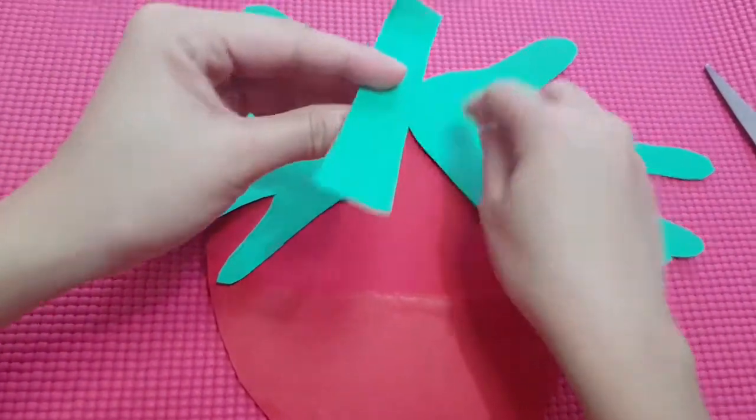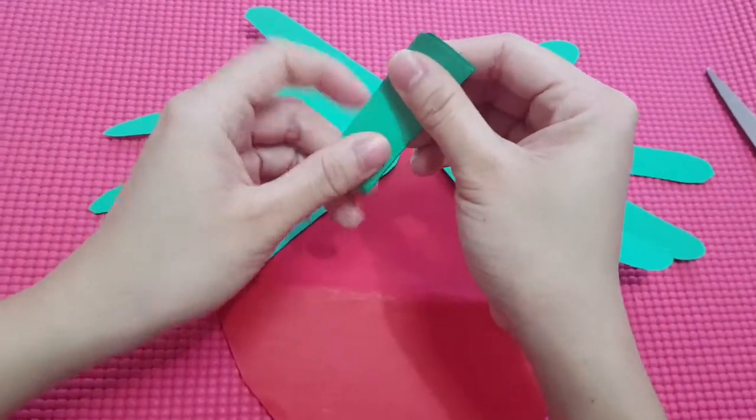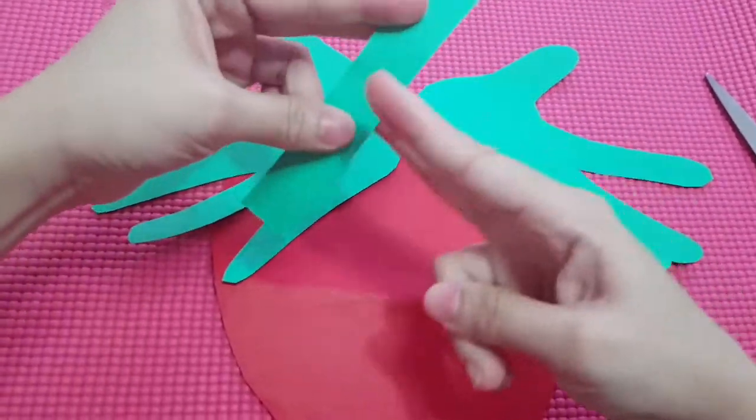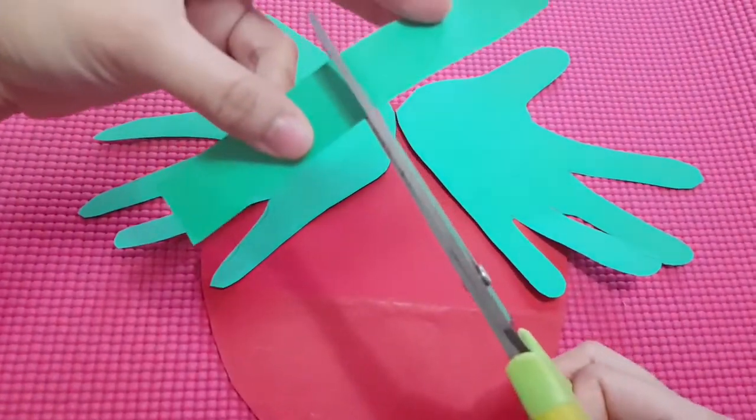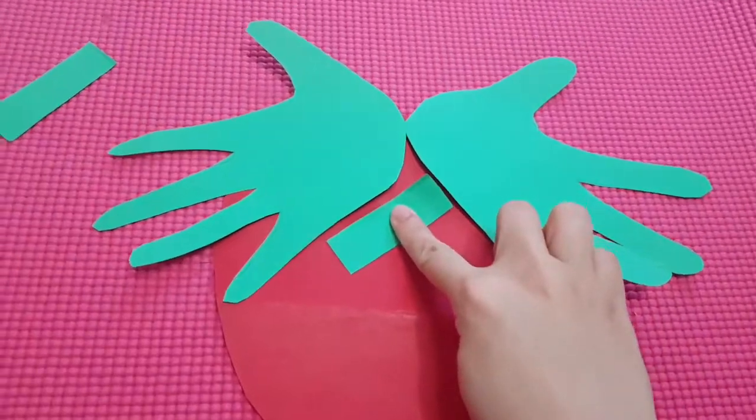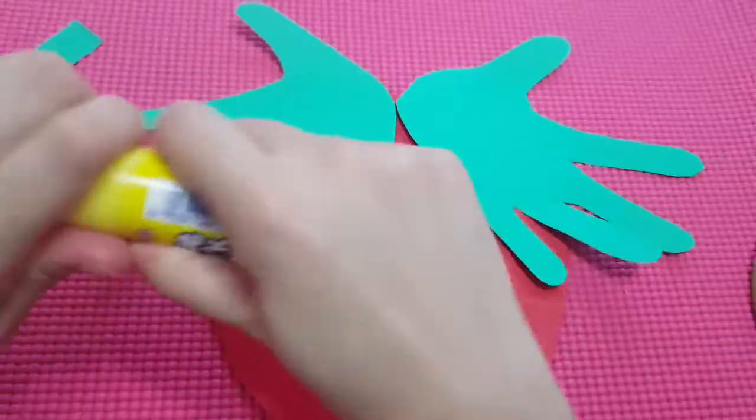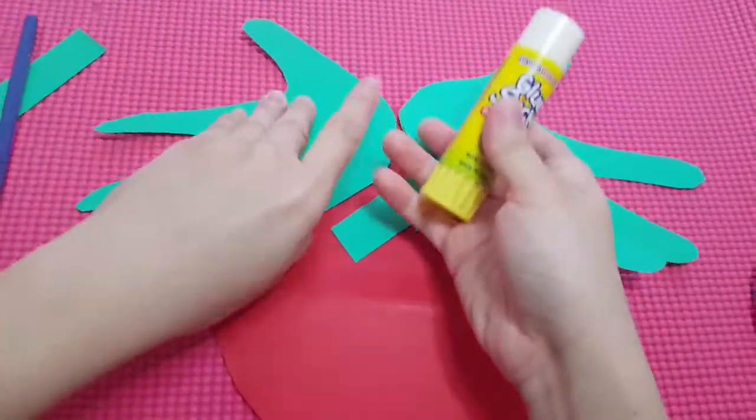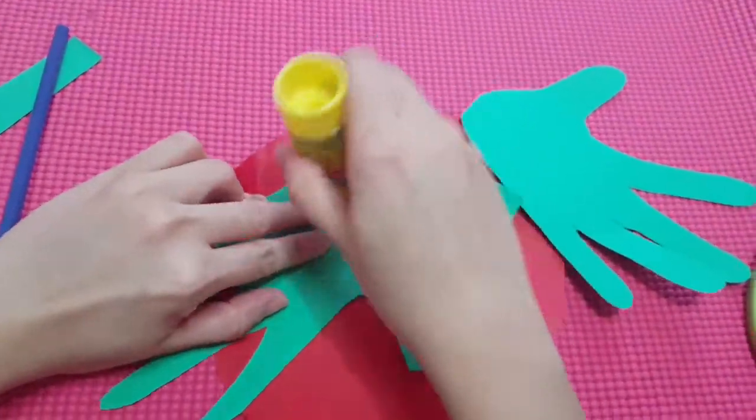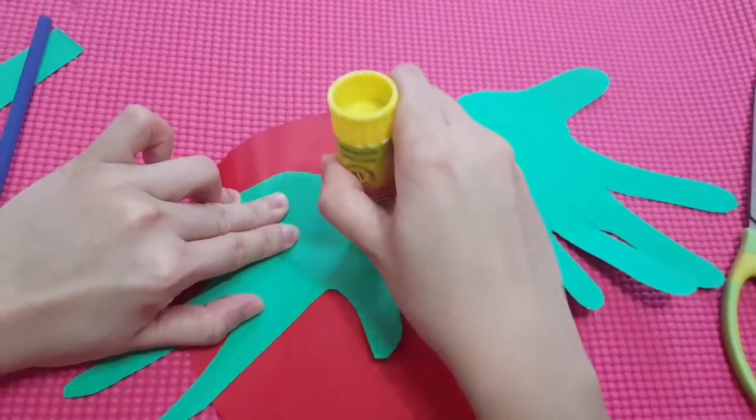Hmm our stem is a bit longer. I'm gonna cut it into half. Now time to bring out the glue. If you do not have any glue stick at home you can use a tape. All you have to do is to just cut a small portion and stick it behind.